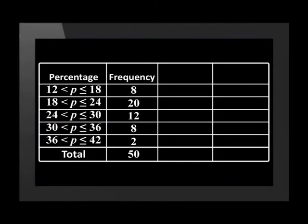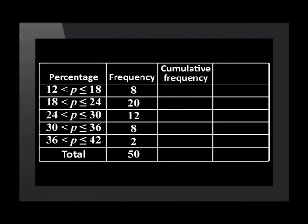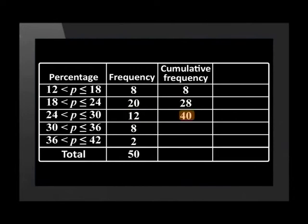Let's do another example together so that we can practice drawing and analyzing these graphs. This table represents the percentage of monthly income spent on petrol and groceries. The first cumulative frequency value is 8. 8 plus 20 gives the second cumulative frequency of 28. 28 plus 12 gives the third value of 40. 40 plus 8 gives 48, and 48 plus 2 is 50, which is also the total frequency.